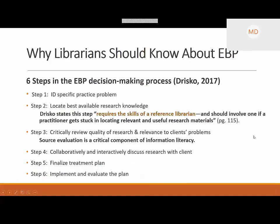Why should librarians know about evidence-based practice? Drisco wrote an article about six steps within EBP decision-making that helps the practitioner step through the whole evidence-based process. Once students graduate, they should understand this process. First, identify an issue or problem the client is having. Then find the best available research knowledge. Third, critically review the quality of that research and compare it to the client's needs. Fourth, work with the client collaboratively and discuss that research. Five, finalize the treatment plan based on the research. Six, implement and evaluate that plan.